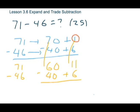So now because we are doing expand and trade, we can go ahead and take 6 from 11, and we have 5. We can take 40 away from 60, and we get 20. And 20 plus 5 is 25.